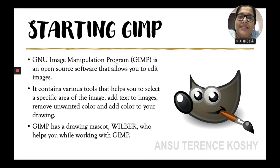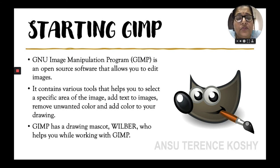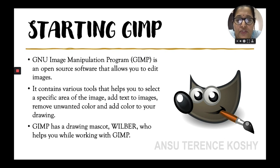Let's start. GIMP — GNU Image Manipulation Program — is an open source software that allows you to edit images. It is a software open to all to edit images or pictures. It contains various tools that help you to select a specific area of an image.